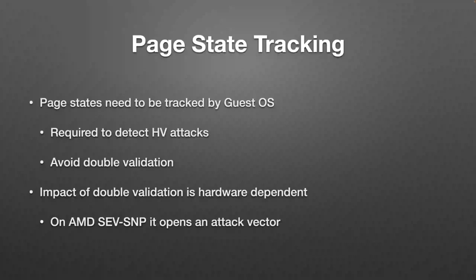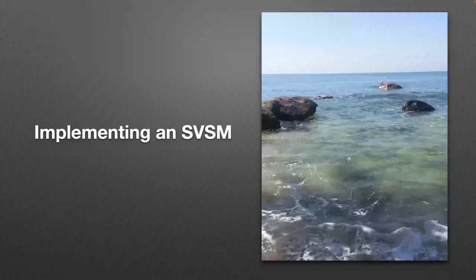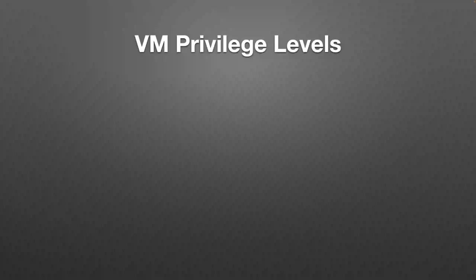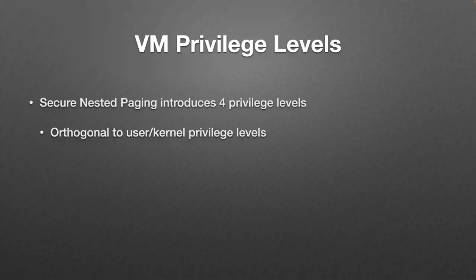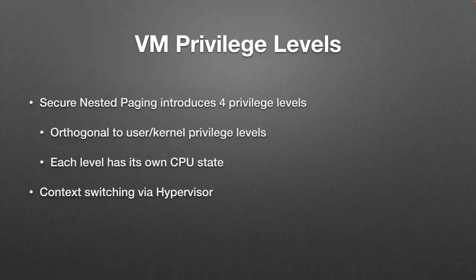Now let's get to the main topic: implementing a Secure VM Service Module. To understand SVSM, we also need to understand VM Privilege Levels (VMPLs), another SEV-SNP feature. With Secure Nested Paging, four VM privilege levels were introduced — orthogonal to user/kernel privilege levels, so you can have all four user code privilege levels at every VMPL. Each level has its own CPU state, and context switches happen via the hypervisor.